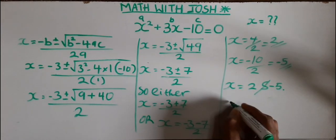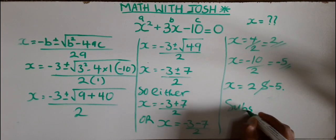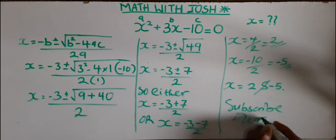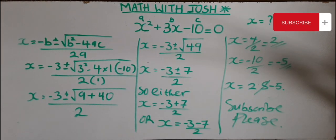So the two solutions to this quadratic equation are 2 and minus 5. Do it like and subscribe, you'll get more of interesting tutorials like this. Thank you.